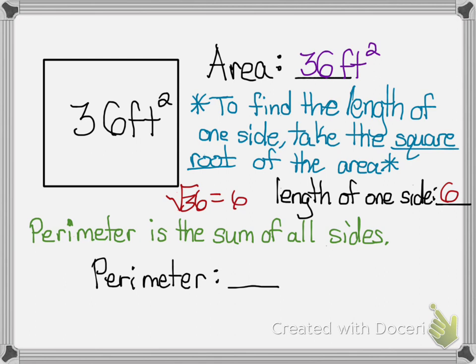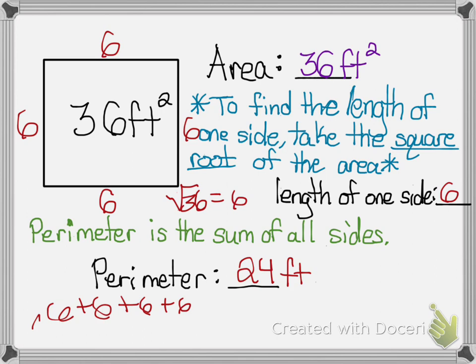To find the perimeter I add up all the sides. So if this is 6 and so is that and so is that and so is that, I'm basically adding 6 plus 6 plus 6 plus 6 and that gives me 24. So 24 feet will be my perimeter.